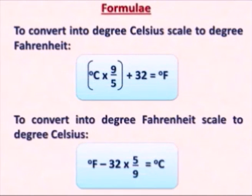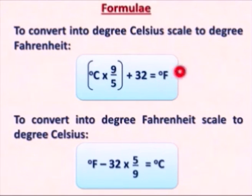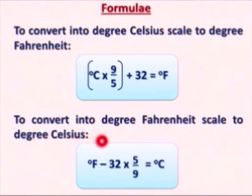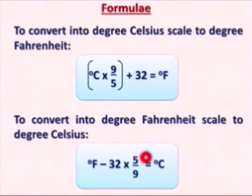The formulas are: to convert Celsius to Fahrenheit, use °C × (9/5) + 32 = °F. To convert Fahrenheit to Celsius, use (°F − 32) × (5/9) = °C. Let's see a few examples.